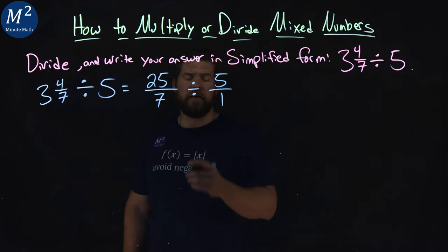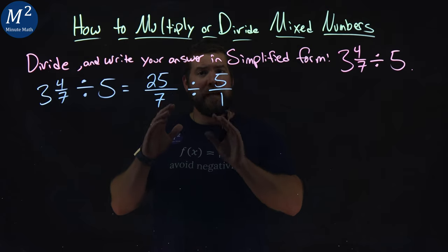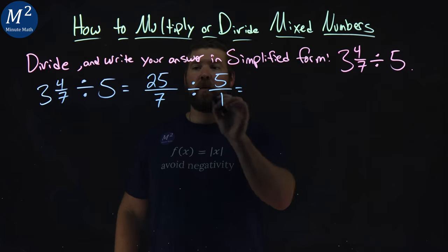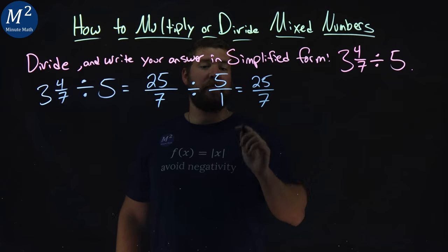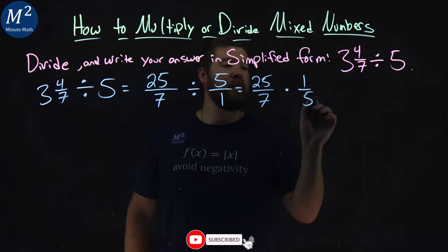Now, this division, if you remember from before, a reciprocal, right, is the same. The reciprocal of the multiplication is the same as division. So, 25 over 7 divided by 5 over 1 is the same thing as being multiplied by 1 over 5.